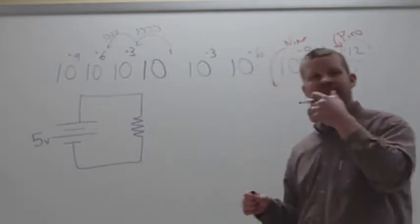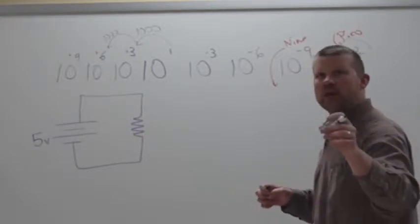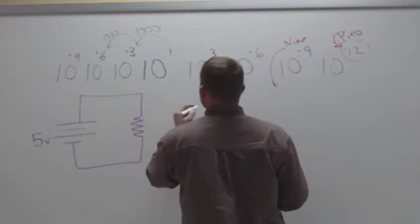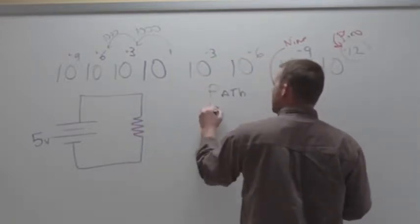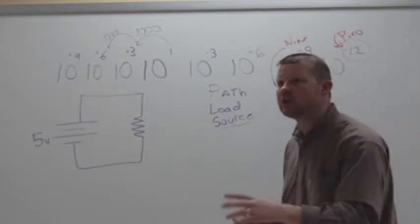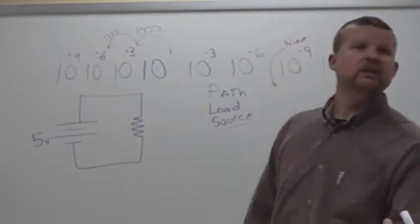Not that. Before we talked about that, what was it that we were dealing with before? About just that flashlight example. What we need is a path, load, source. That's right. You have to have those three ingredients in order for any circuit to work. And then, as we said, we needed an indicator control.